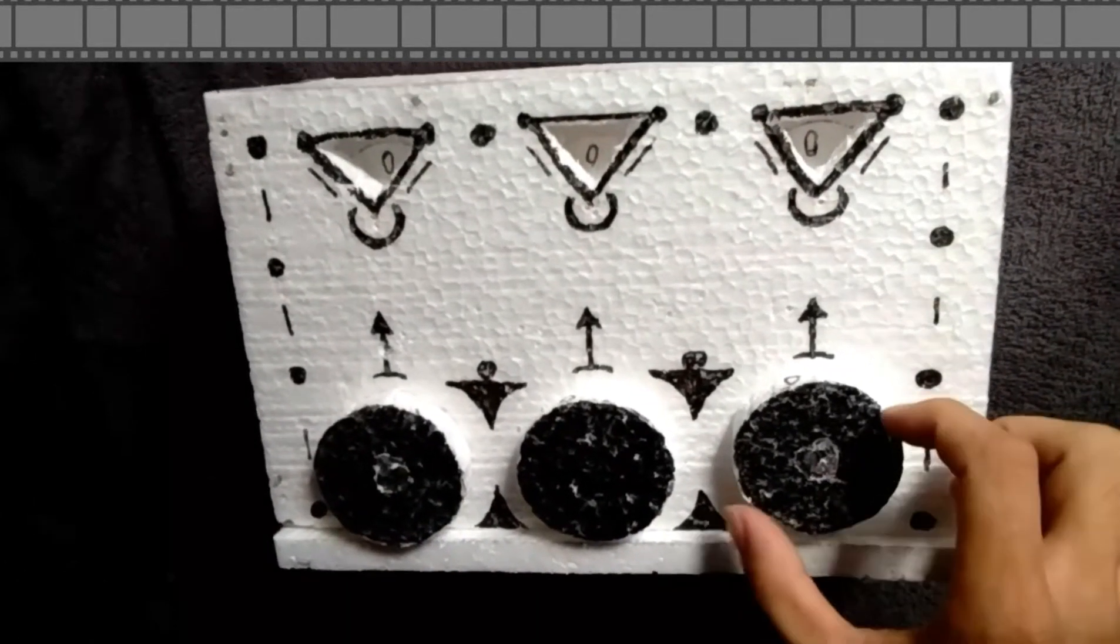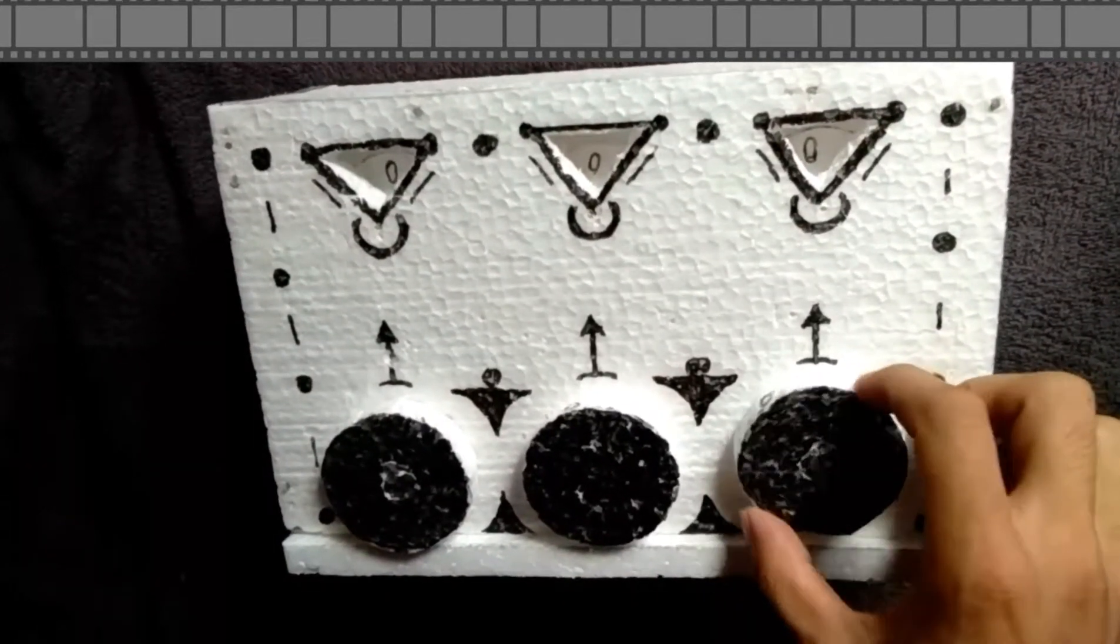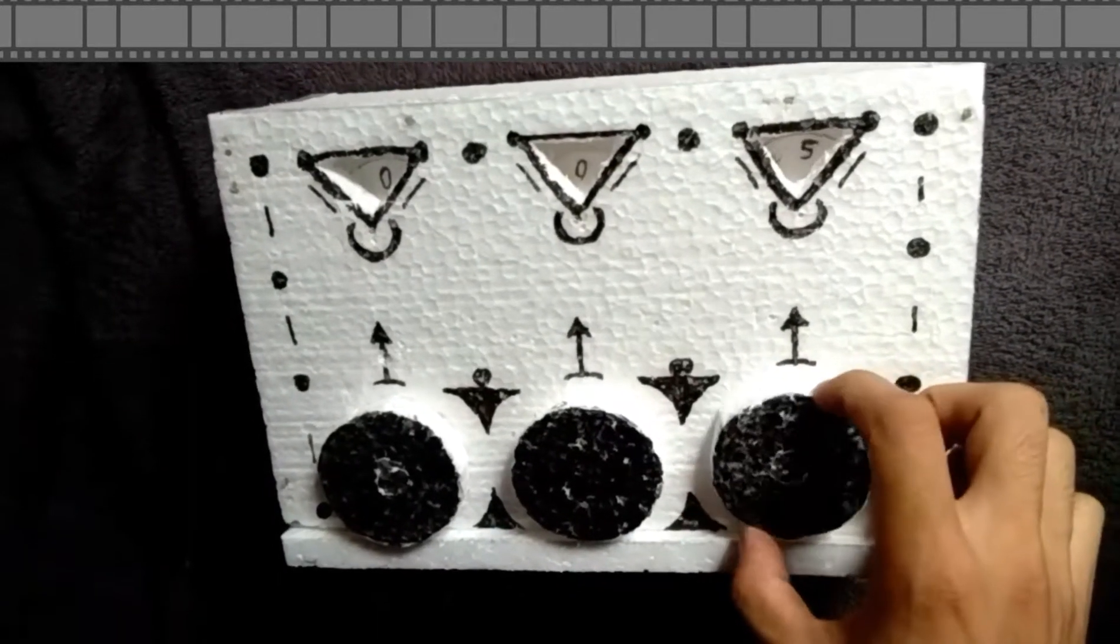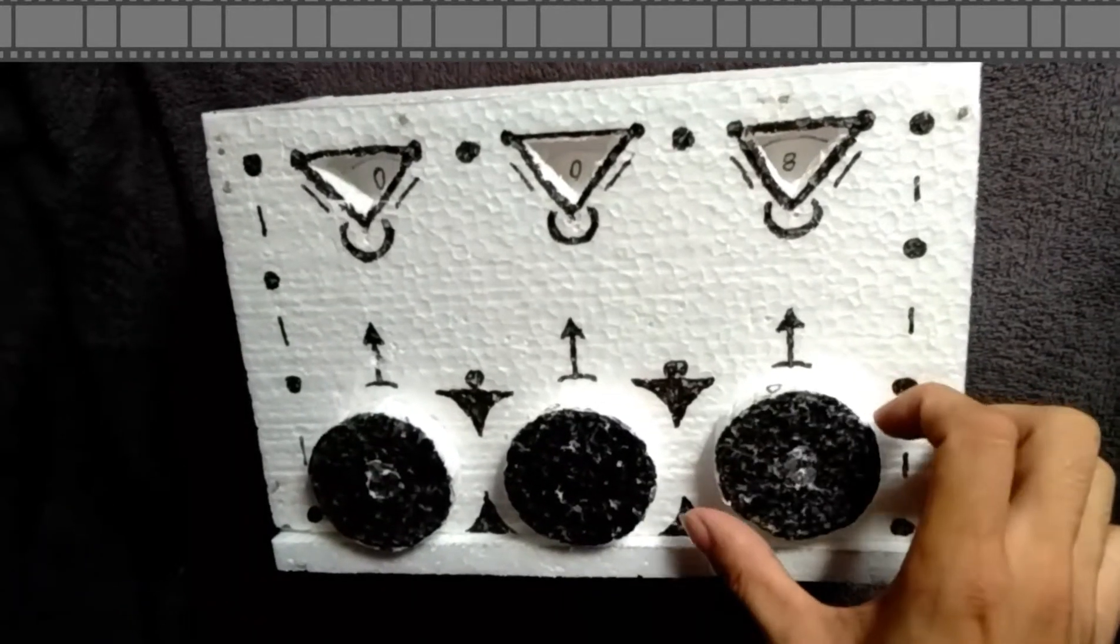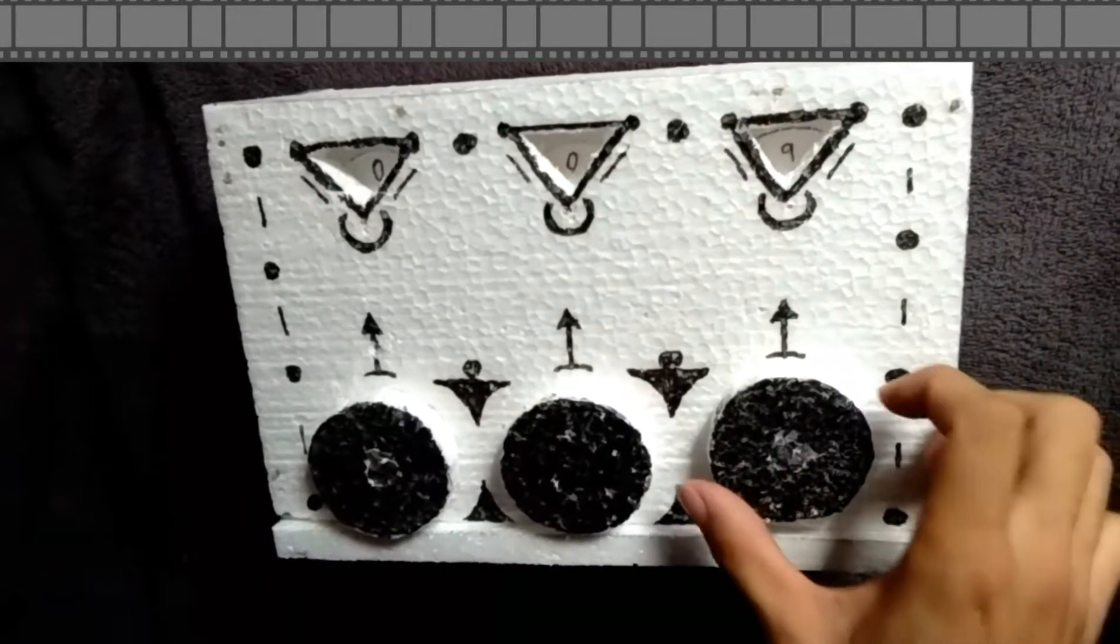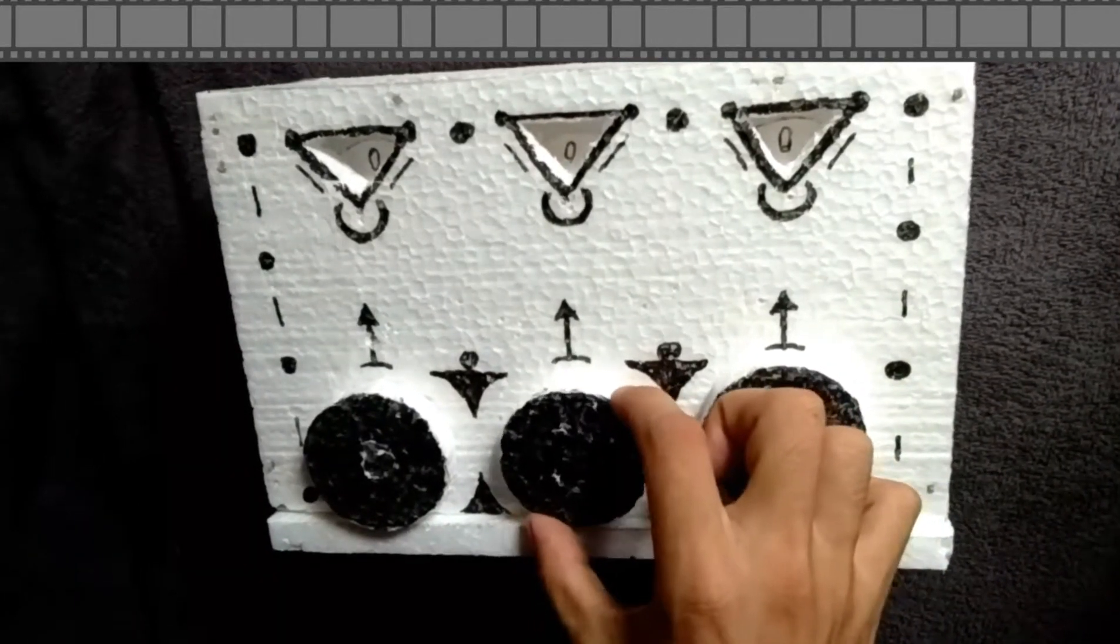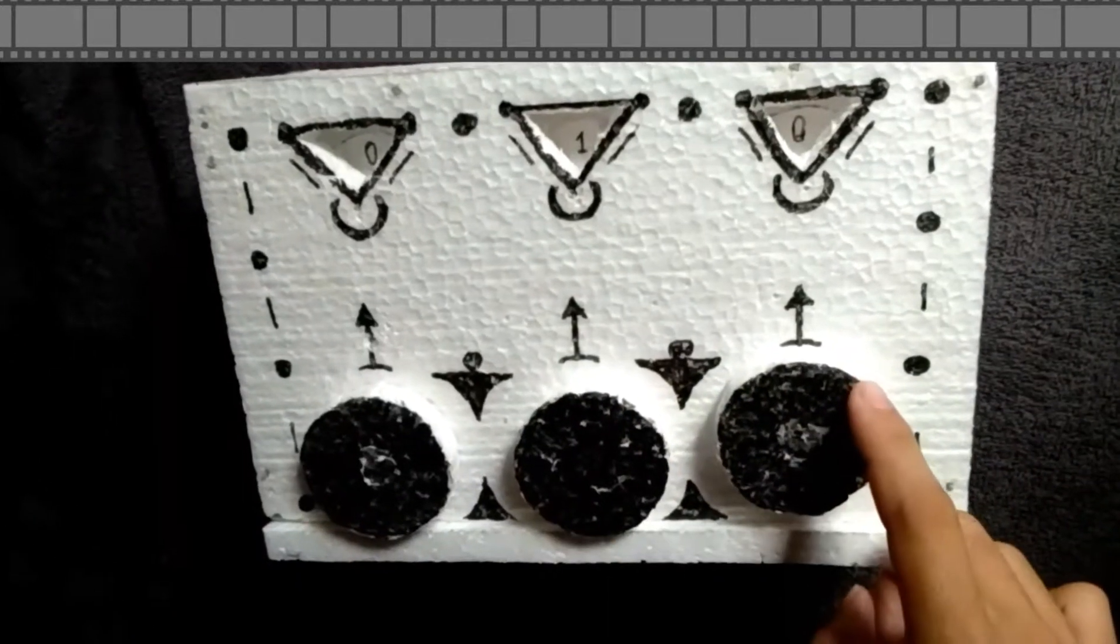For example, you turn the button in the first gear starting at zero: one, two, three, four, five, six, seven, eight, nine, then back to zero. And the other gear will add one. So back to the first gear...